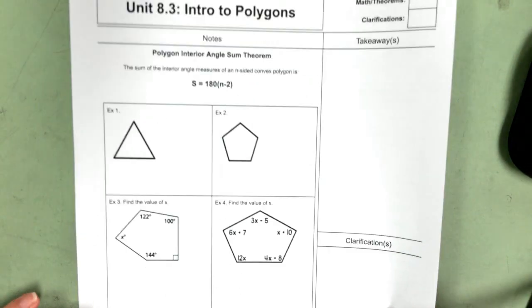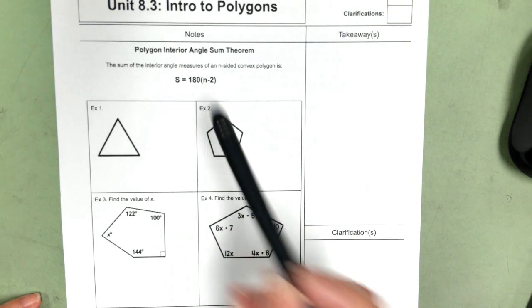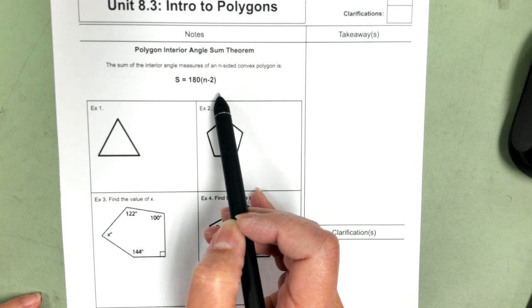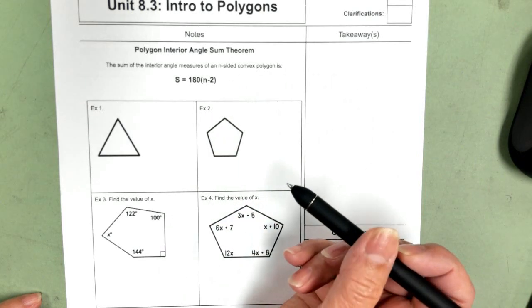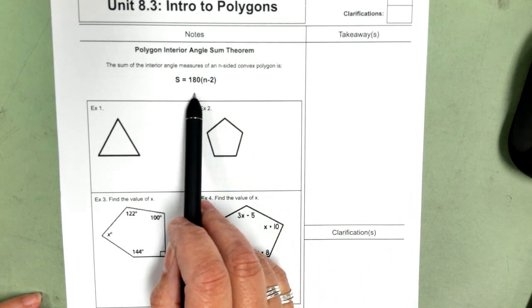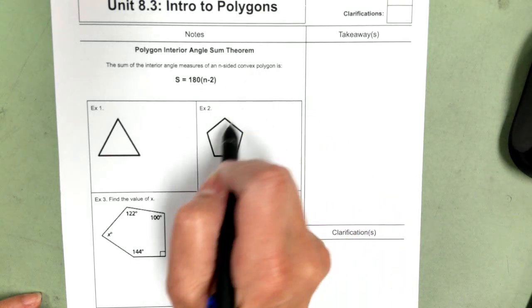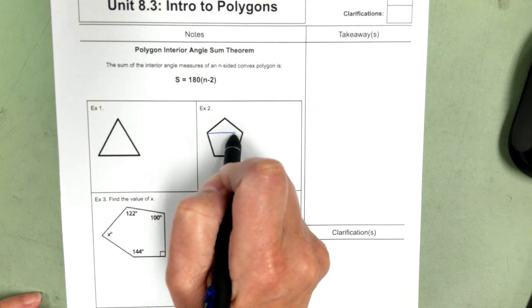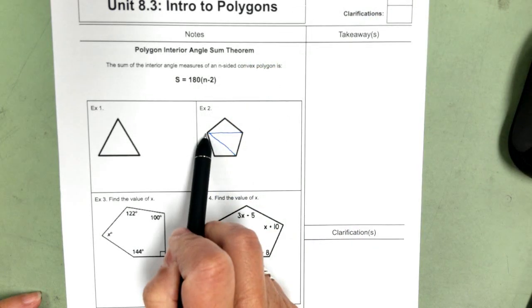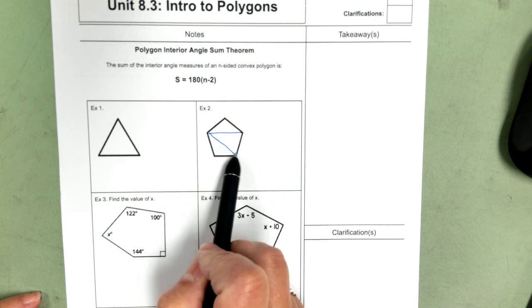So the first theorem we're going to look at is the interior sum theorem. And it's very simple. You can divide any polygon into triangles by connecting their non-consecutive vertices. And we already know that the sum of the angles of a triangle is 180. So if we connect the non-consecutive vertices from the same vertex, I'm going to start here and I can go to this and this. These are my non-consecutive vertices from here.